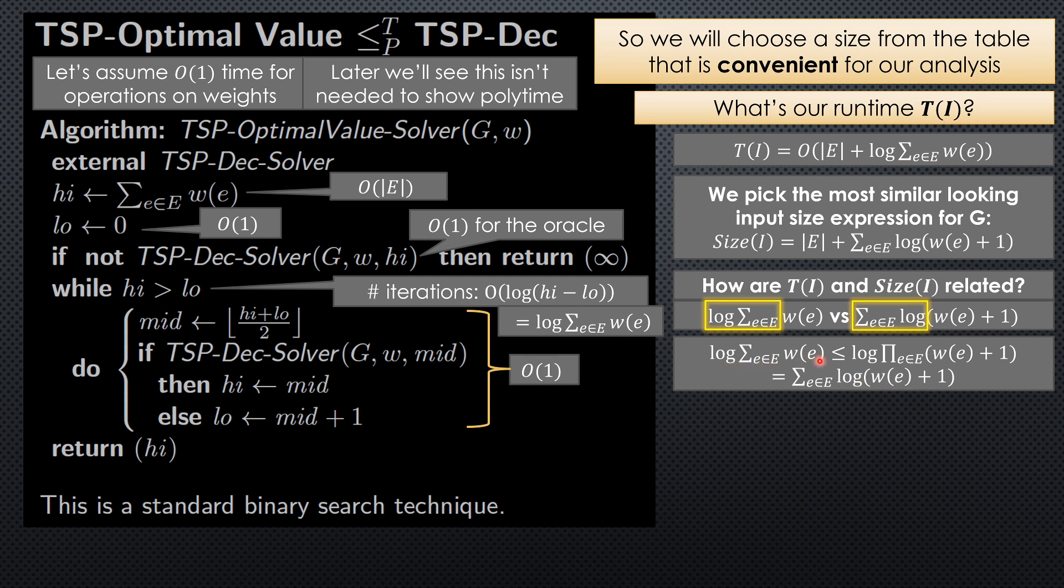So we've argued here that log sum of weights is less than or equal to sum of log weight plus 1s. So this term, the second term in the T(i) runtime expression, is actually smaller. It's less equal modulo these constant factors in the big O notation. It's less than or equal to this second term in the size expression. And of course, if we ignore these constant factors from the O, then this E term here matches this E term. And this second term in T(i) is less than or equal to the second term in size(i). But what about these constant factors in the big O?